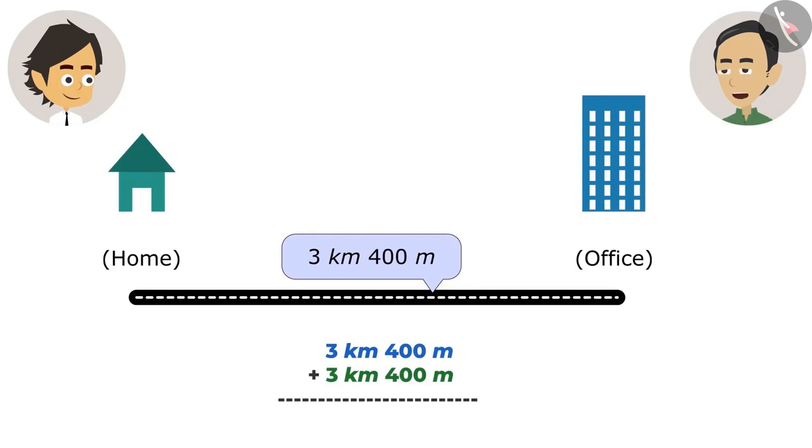Look, we can add numbers only when their units are the same. So here, we will add the value of metre to the metre and we will add the value of kilometres to kilometres. If you just add the value of the metre, the answer will be 800 metres. And adding the value of kilometres, the answer will be 6 kilometres. This means that you travelled 6 kilometres 800 metres to go to and come back from the office. Ayushman, you are absolutely right.